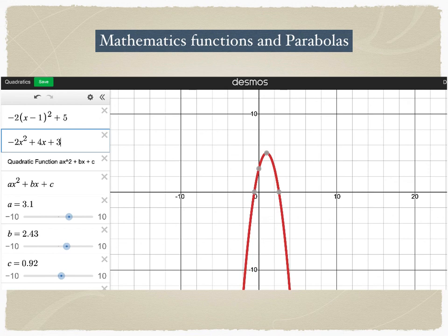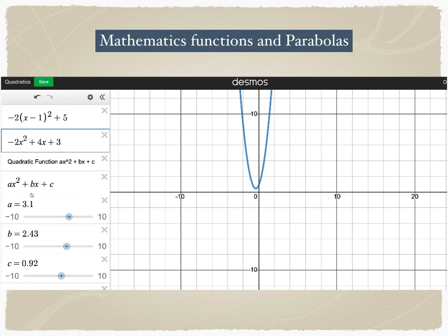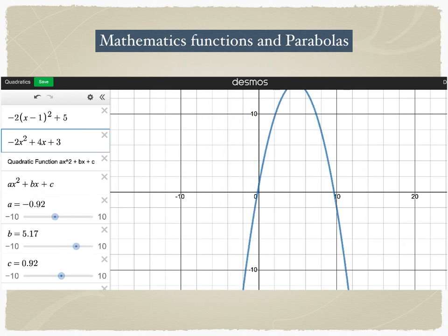On the second formula, you have three different terms: x squared, x, and 3 as a constant. This is the general formula of quadratic functions: ax squared plus bx plus c, where a, b, and c are real constants. If I graph a general quadratic function and vary the values of a, b, and c, the shape of the parabola starts to change.